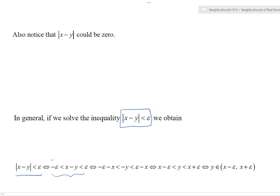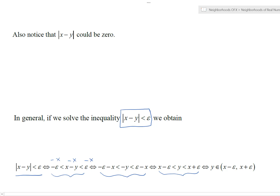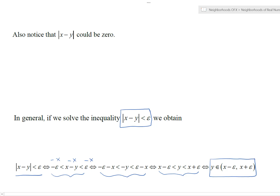Subtracting x from all parts of the compound inequality gives us negative y in the middle, with negative epsilon minus x on the left and epsilon minus x on the right. Multiplying through by negative one gives the compound inequality showing that y is trapped between x minus epsilon and x plus epsilon — so this neighborhood is just the open interval from x minus epsilon to x plus epsilon.